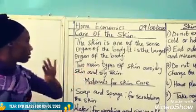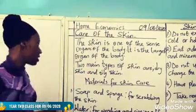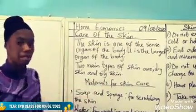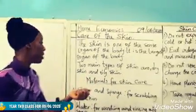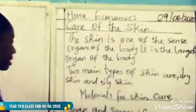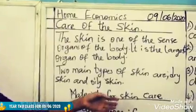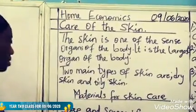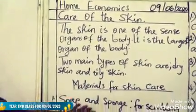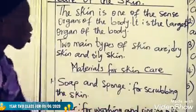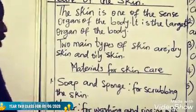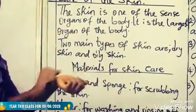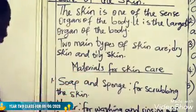We have two main types of skin: we have the dry skin and the oily skin. We have materials for skin care — materials you use to take care of the body — the soap and the sponge for scrubbing the skin. You use your soap and your sponge to scrub the skin and keep it clean.